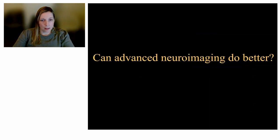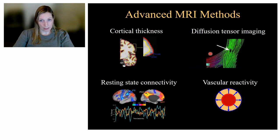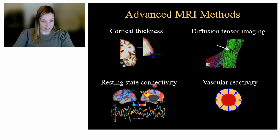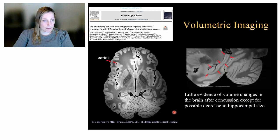Can other advanced neuroimaging techniques do better? Many areas are being investigated, including measuring brain volumes and cortical thickness, diffusion tensor imaging to look at tracts within the brain, resting state connectivity, and the health of blood vessels through cerebrovascular reactivity.